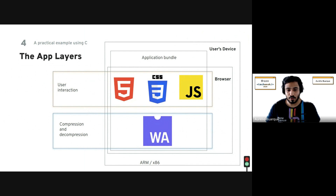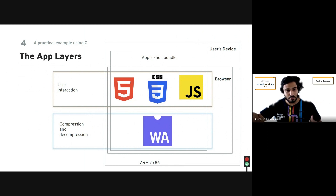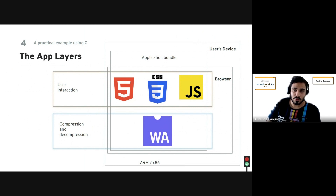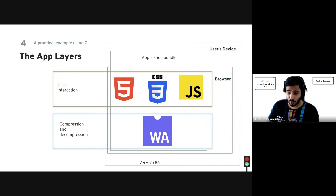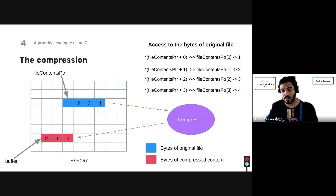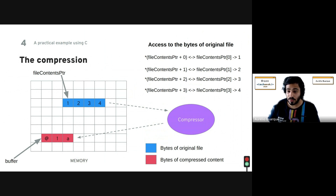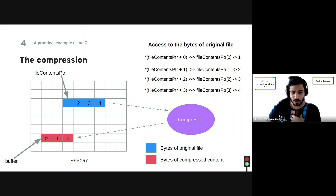About the app architecture: the user's device runs a browser with two main layers. The first handles user interaction using JavaScript, HTML, and CSS — forms, input validation, etc. The compression logic is written in C. To compress a file, we first collect the user's file, then allocate memory into the app and store the file's bytes there, getting a pointer to it. In the WebAssembly world, there are no JavaScript objects — only numbers and pointers.